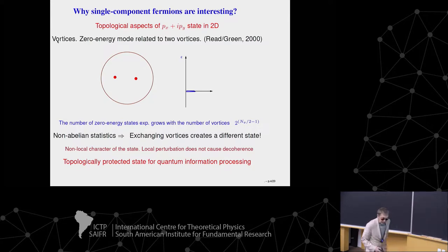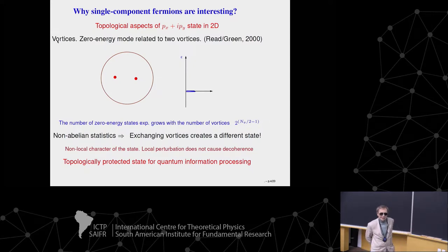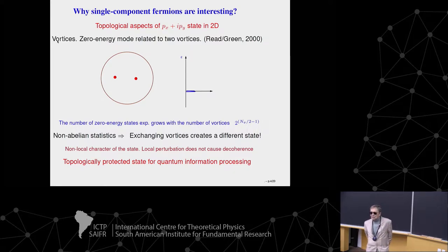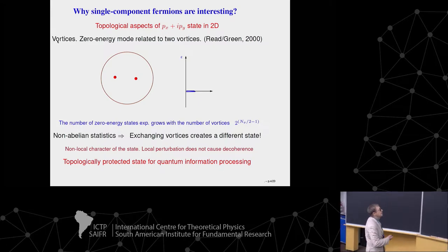Before I turn to this, I would like to raise another question. When we talk about dipolar fermions, very often we mean single-component fermions. They interact with each other through interactions which have only odd orbital angular momentum — which means P-wave, et cetera. And generally, this interaction is much, much smaller than the ordinary S-wave interaction between neutral atoms. So the question is: why are single-component fermions interesting if the interaction is so small?